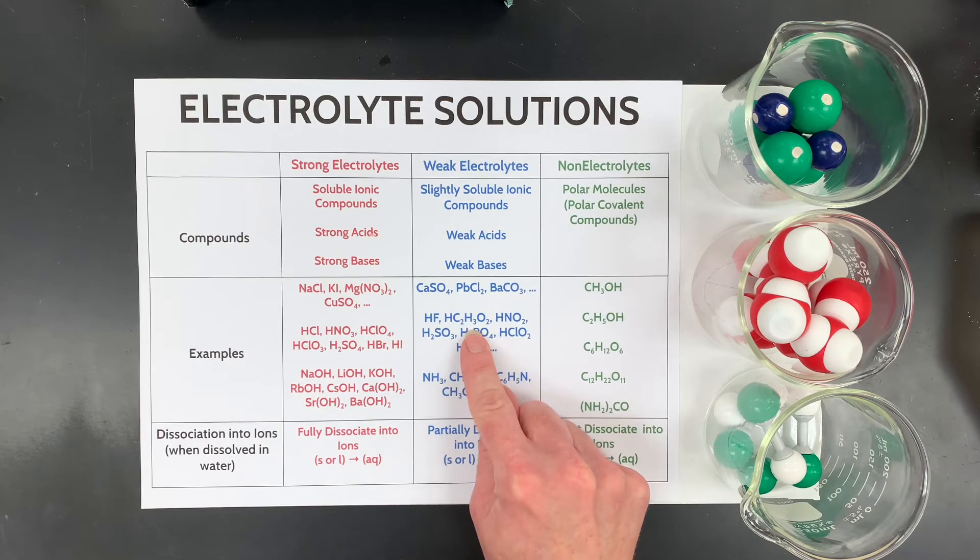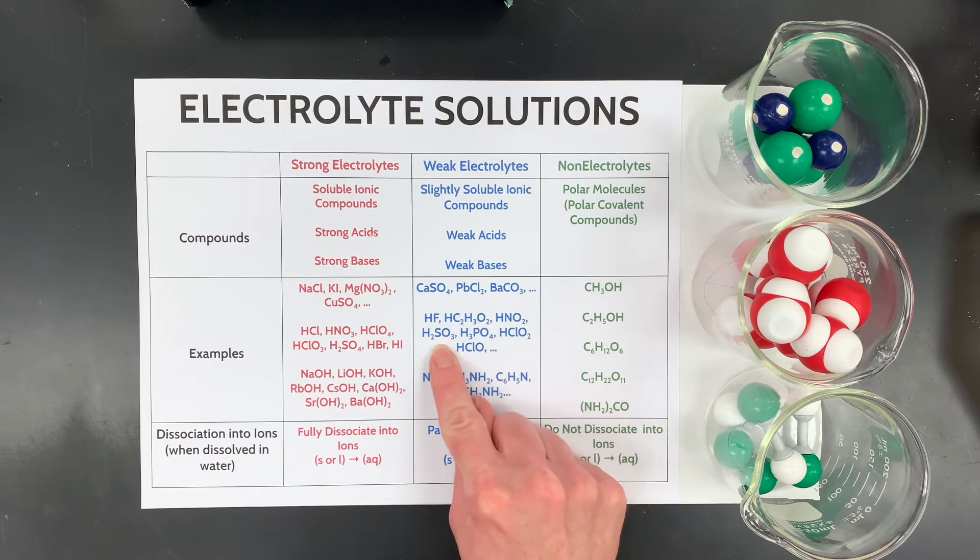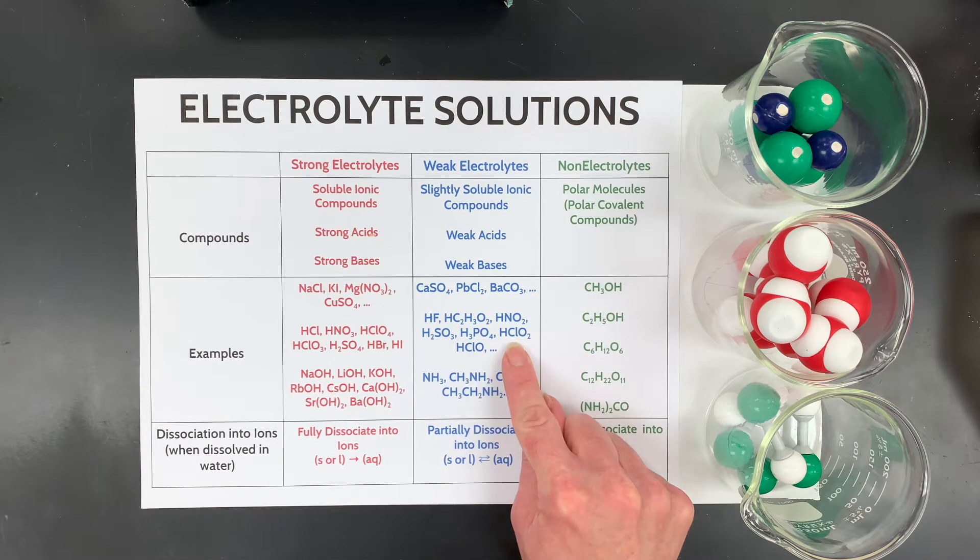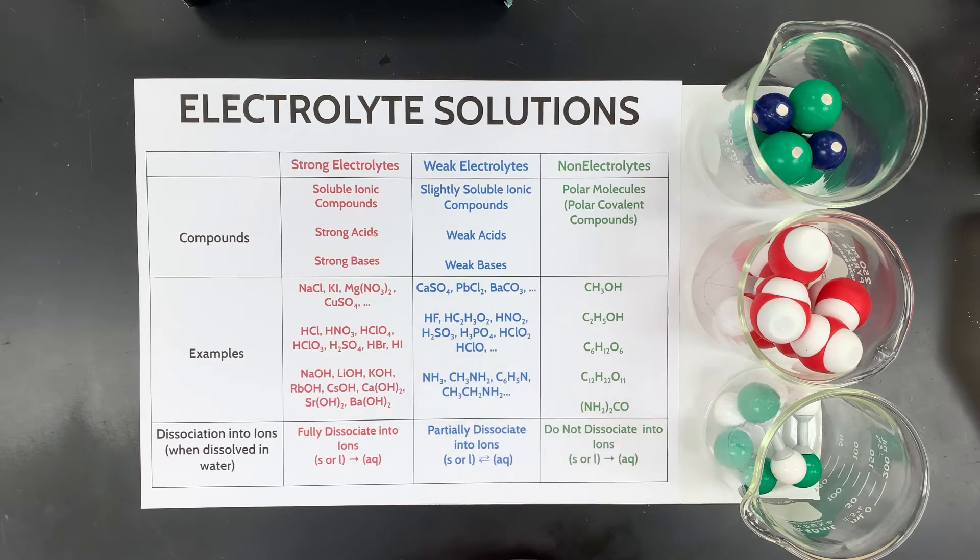And then this is just a small list of weak acids: hydrofluoric acid, acetic acid, nitrous acid, sulfurous acid, phosphoric acid, chlorous acid, and hypochlorous acid. And then there's many more.